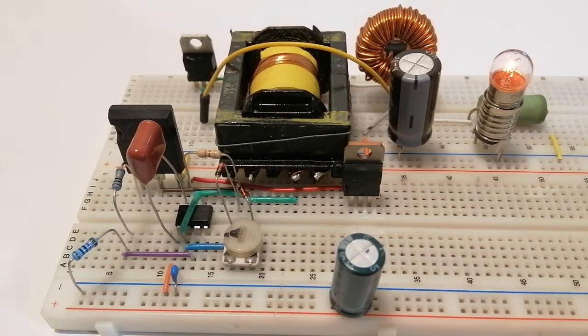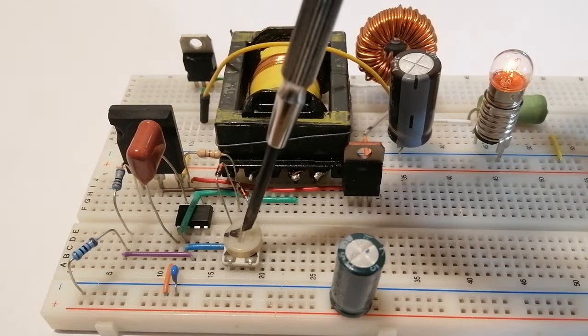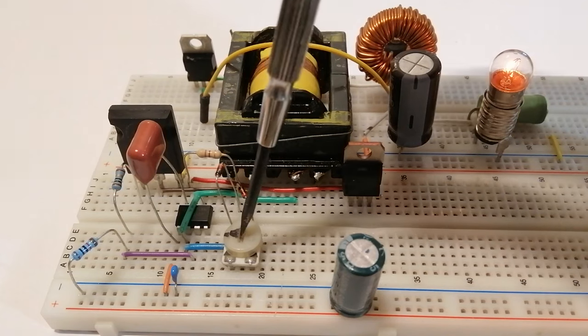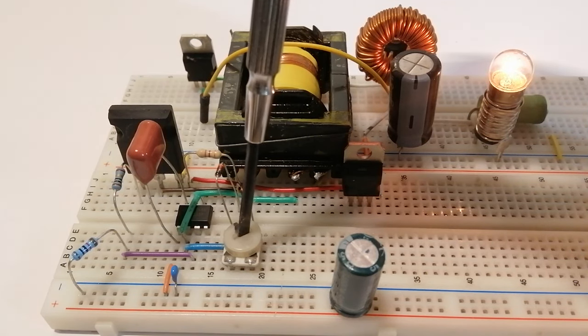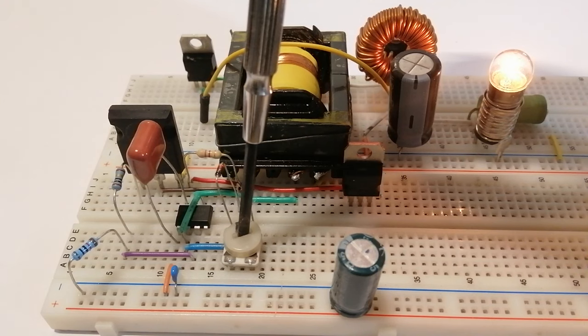So in the next video I want to add a simple IC that controls the PWM based on the output voltage and maybe the current. So you can subscribe if you don't want to miss the video. And I'll see you in the next one.